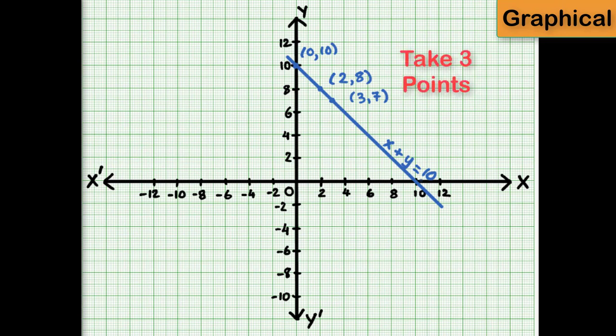An important tip is, you should always take 3 points, not 2 points. Because with 2 points, you'll always get a straight line. But the third point is acting like a check. Because if the line does not pass through all the 3 points, then either your calculation is wrong or your plotting is wrong. So remember to always take 3 points.